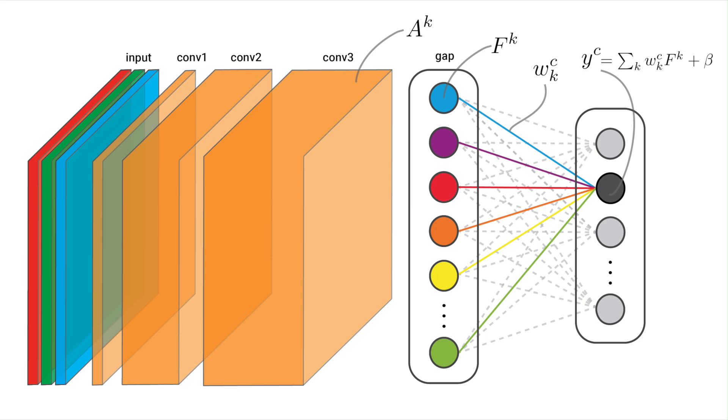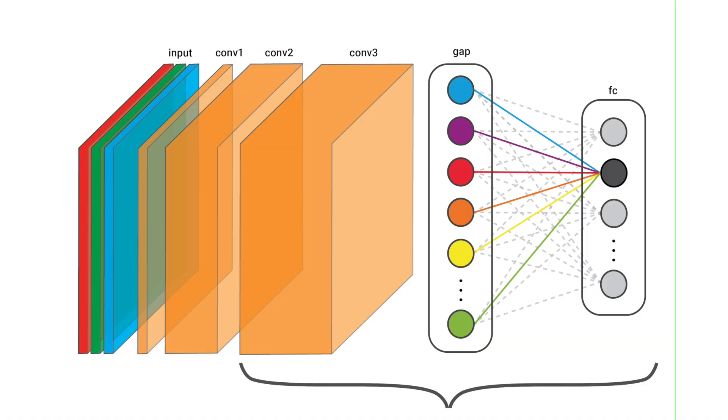This is the formula for an output logit. Each one is a linear sum of the GAP values, weights, and bias. We'll come back to this when discussing the relationship with GradCAM. Keep in mind that to create CAMs, the network doesn't have to look exactly like this. You can have more convolutional layers, some max pooling layers in between, and any other mechanisms. What is important is the final three layers: CAMs require a convolutional layer, followed by a GAP layer, and a fully connected layer.